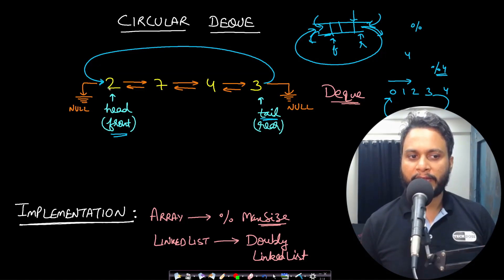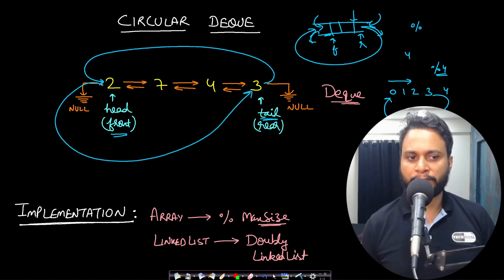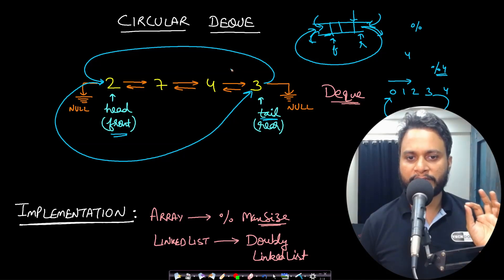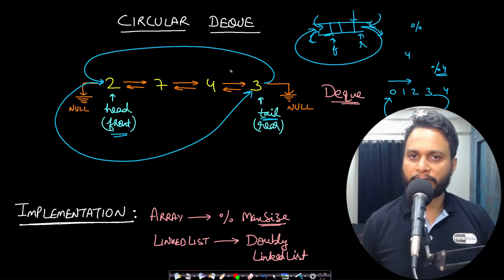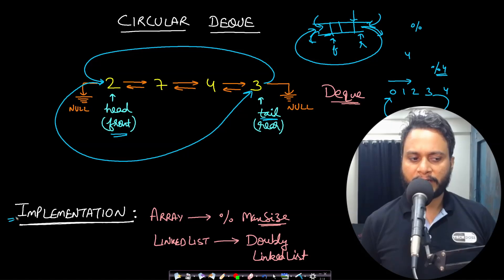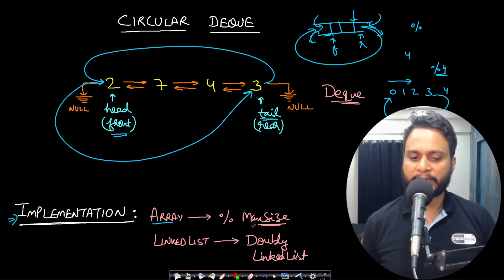The previous pointer of the head node should point to node 3. Once we do this transformation, the deque changes into a circular deque. We can use either the array implementation with mod of max size, or the doubly linked list implementation.